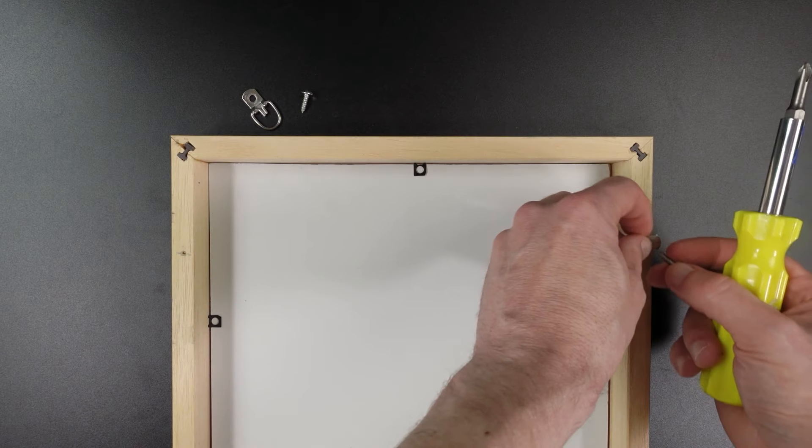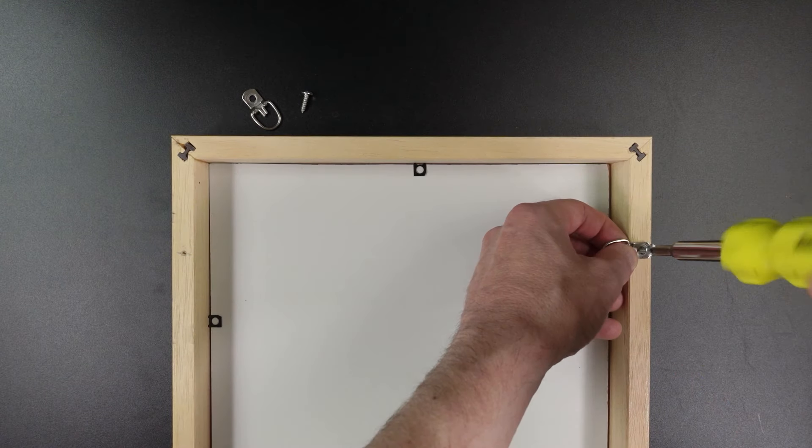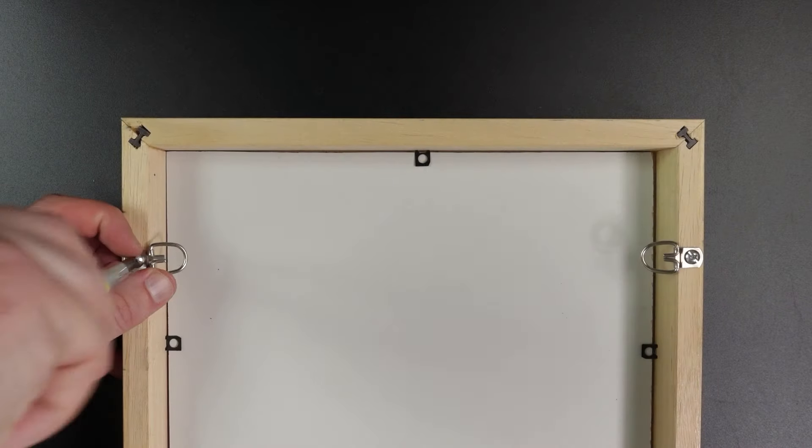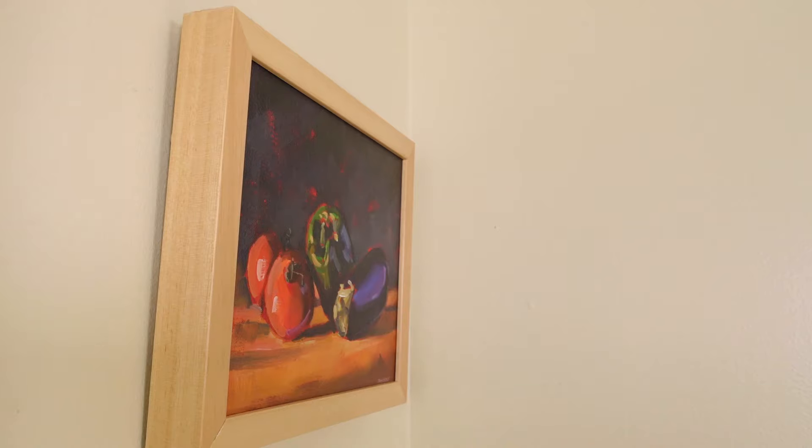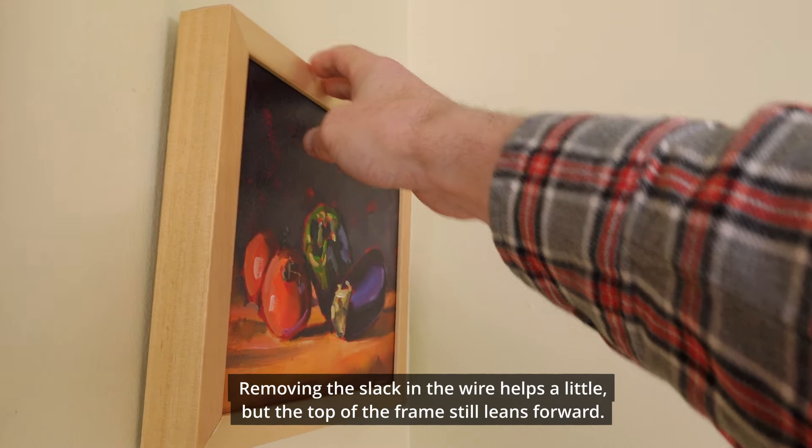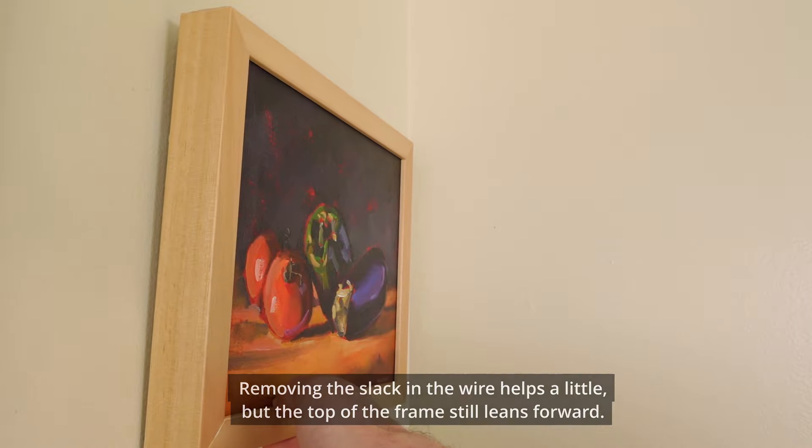So once you have the holes drilled, you just screw in the d-ring hangers. I've noticed that d-rings make the painting lean forward off the wall and it leaves a bigger gap at the top of the picture.